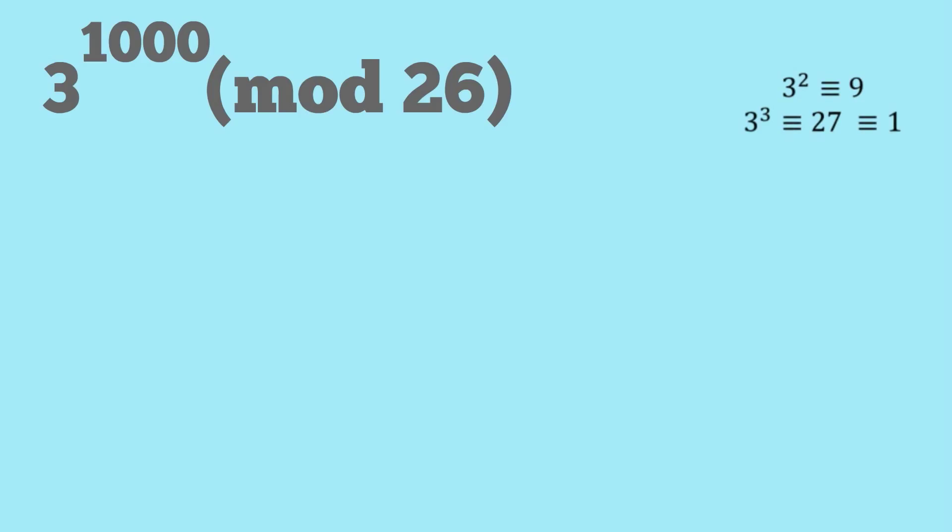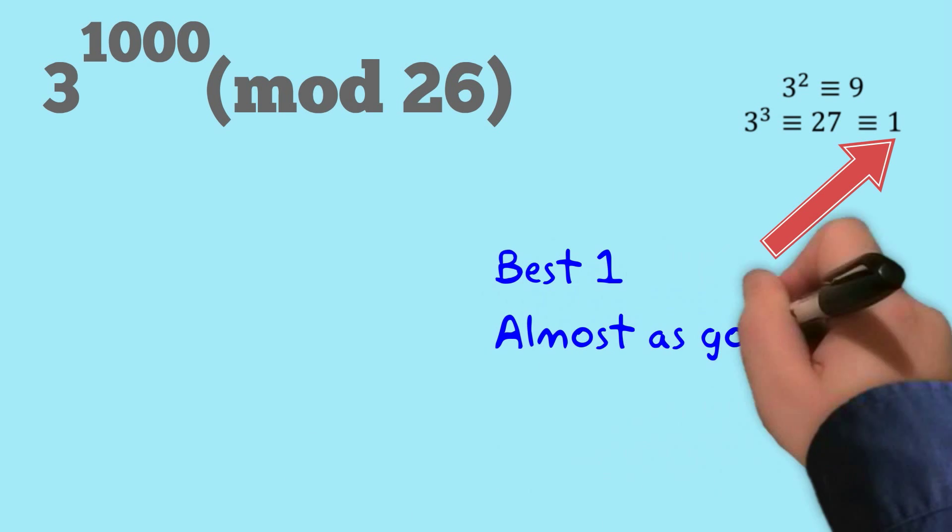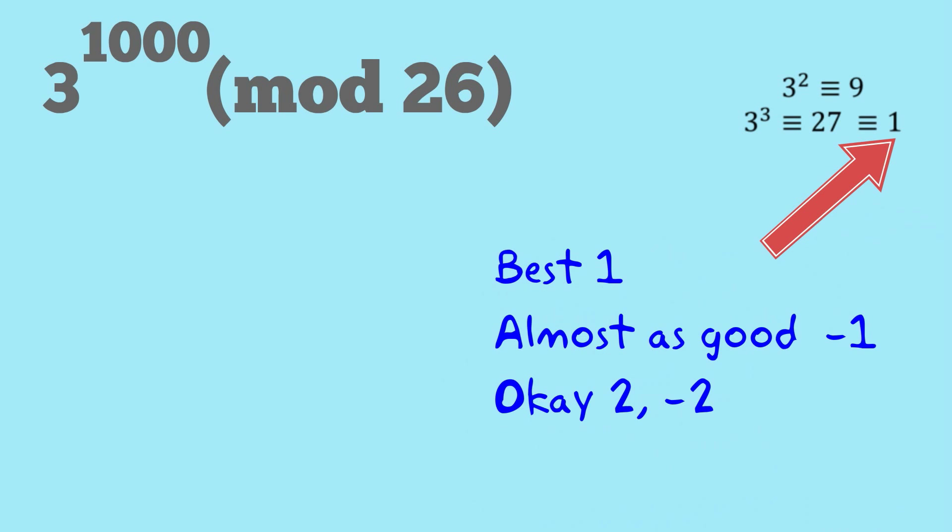What I do is I just start working out powers of 3. So 3 squared is equivalent to 9, 3 cubed is 27, is equivalent to 1. And what I'm looking for is a very low number here. So I like 1 best. The next one is negative 1, I'm happy with, or even 2 or negative 2 will often help you.